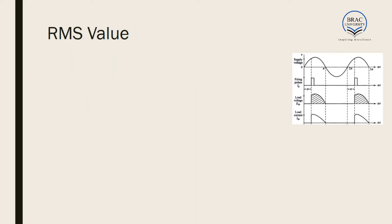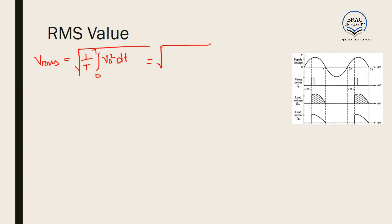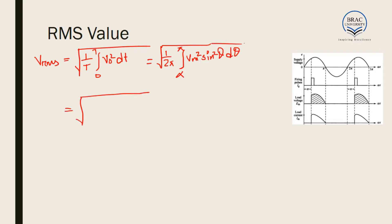Now if we have to determine the RMS value, we use the formula: Vrms equals the square root of 1 over T times the integral from 0 to T of V squared dt. This equals the square root of 1 over 2π times the integral from alpha to pi of Vm² sin²θ dθ. We can write this as the square root of Vm² over 2π times one half, times the integral from alpha to pi of 2 sin²θ dθ.